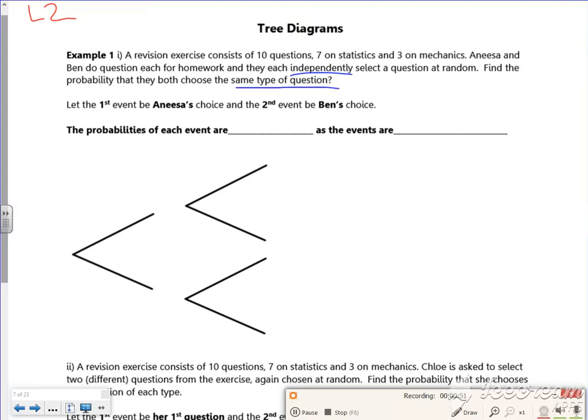Right, so it says Anissa's going to be the first choice, Ben's going to be the second choice. So the probabilities of each event are - they're going to be the same, as the events are independent.